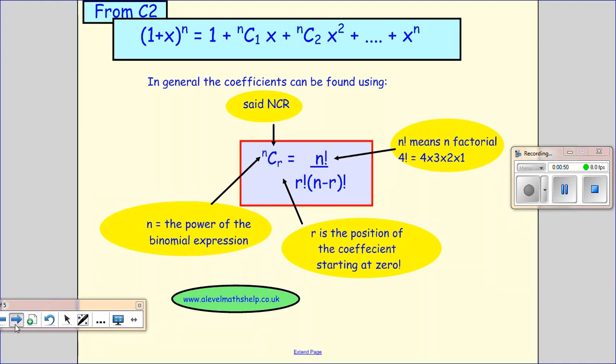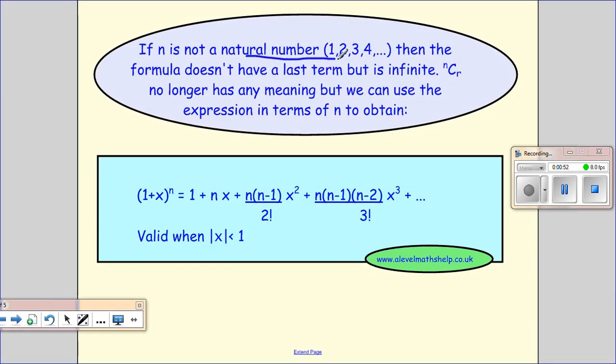Okay, so if we don't have a natural number, that's a positive whole number, then the formula doesn't have a last term because when you count down you don't get that zero to the power of zero term. So what we have to do then is we use this formula here.